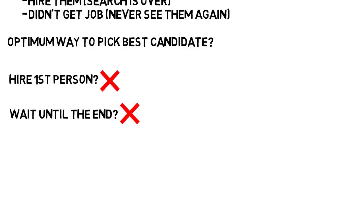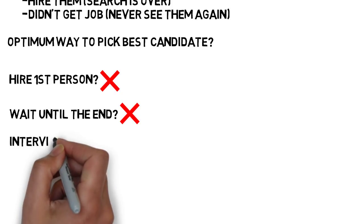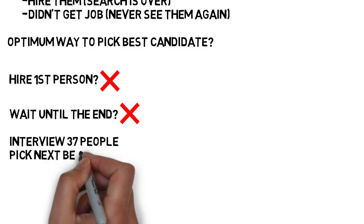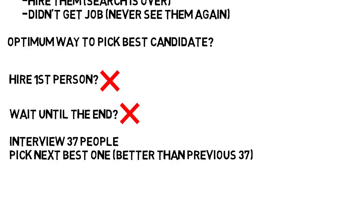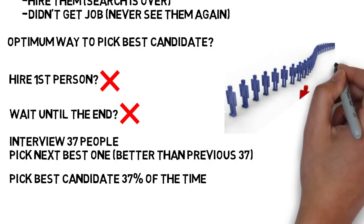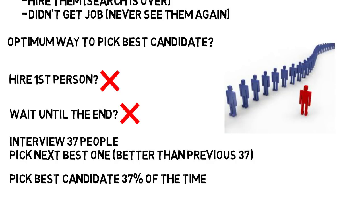Well, the algorithm for this problem is to interview 37 people and then pick the next best one that's better than all the previous 37. Using this algorithm, you will pick the best candidate of the 100 37% of the time. So it does fail 63% of the time, but even if you interviewed a million people, it would still work 37% of the time, which is not bad. If you tried to do this on your own, you would likely fail to pick the best person way more times.